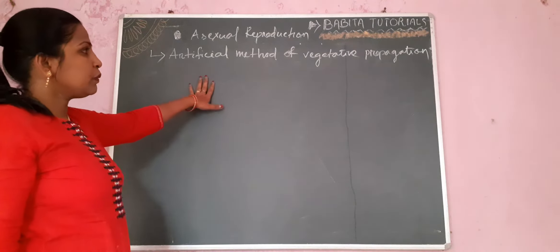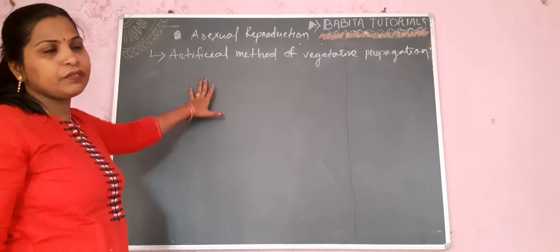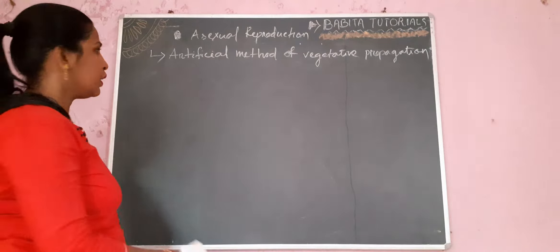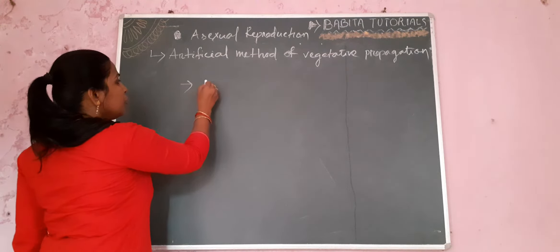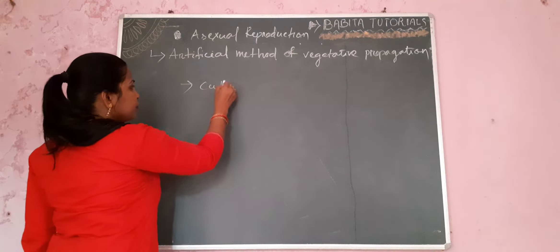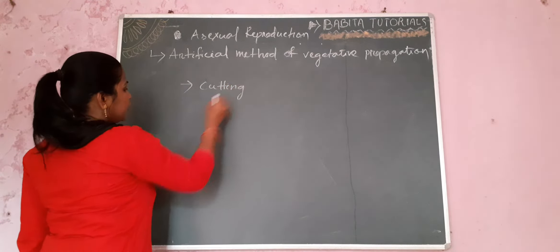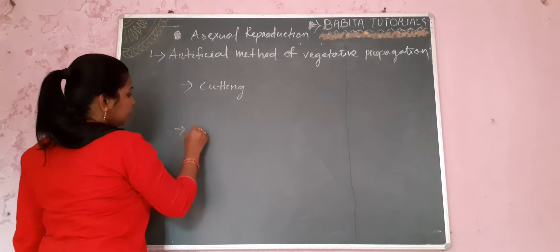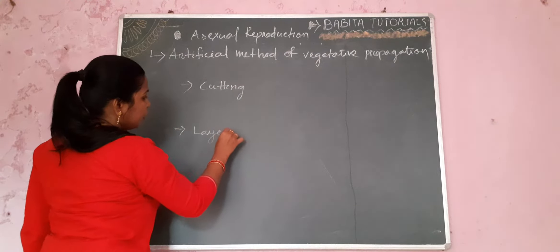In the case of Artificial Method of Vegetative Propagation, there are different methods. I will teach you about only cutting, next one is layering, and the third one is grafting.